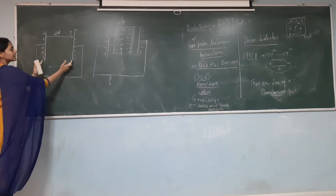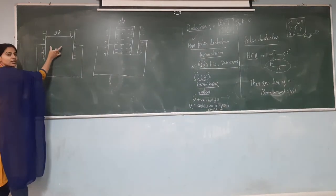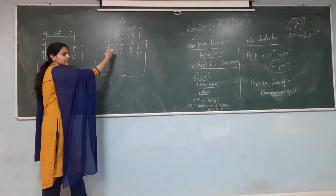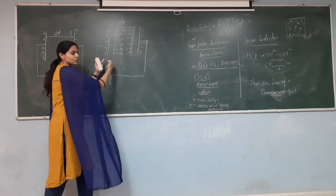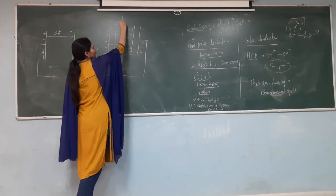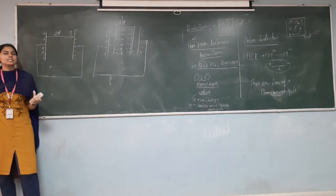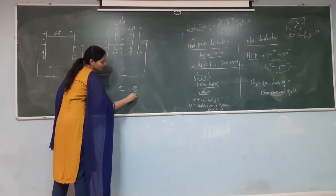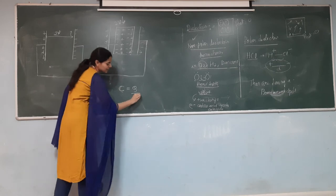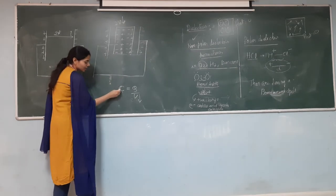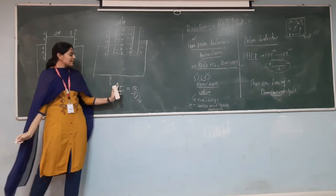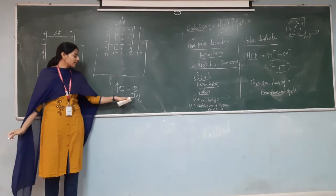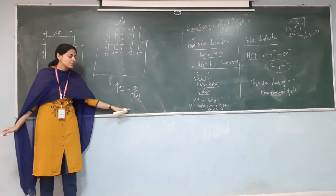Earlier when the capacitor plates were charged, the potential difference was 2 volts. By neutralizing the charges with the dielectric, the voltage decreases from 2 volts. Since C = Q/V and capacitance is inversely proportional to voltage, by decreasing the voltage while keeping the charge, the capacitance of the capacitor plates increases.